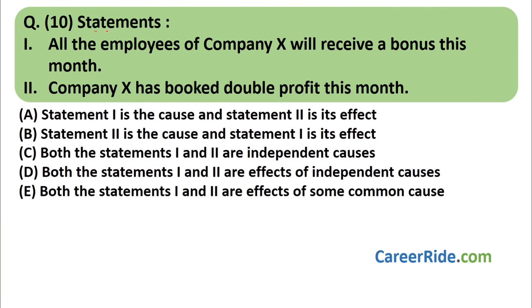Question number ten. Statements: (1) All the employees of company X will receive a bonus this month. (2) Company X has booked double profit this month. 'Company X has booked double profit, so all the employees will receive a bonus' — this makes sense. The reverse does not. Answer is B — statement two is the cause, statement one is its effect.